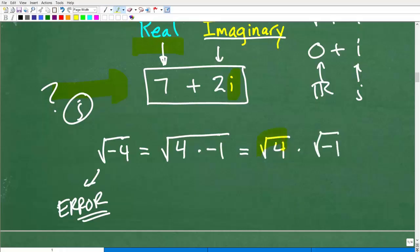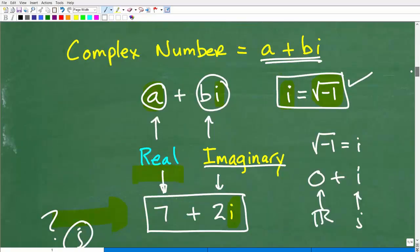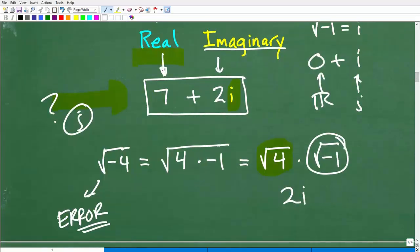So what is the square root of four? We'll just take the principal square root, the positive answer. That would be two. And what is the square root of negative one? Well, again, by definition, the square root of negative one is i. So the answer here would be 2i.